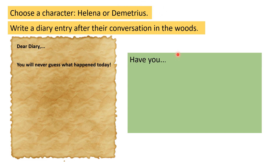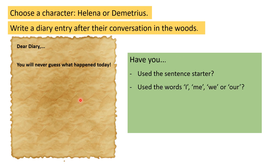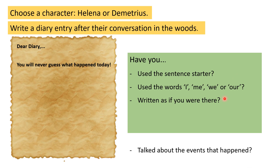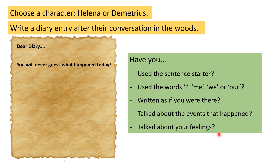When you're writing, you need to ask yourself these questions. Have you used the sentence starter? Have you used the words I, me, we, or our? Remember, these are in first person because you are imagining that you are Helena or Demetrius. You need to write it as if you were there just after that conversation in the woods. Have you talked about the events that happened? Have you talked about your feelings? Have you explained the situation between Helena and Demetrius? And if you're Helena, have you explained how that makes you feel? And if you're Demetrius, have you explained how that makes you feel? Pause the video and spend the remainder of the lesson completing your diary entry, making sure you complete all of the bullet points in the checklist before you finish.